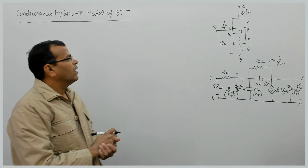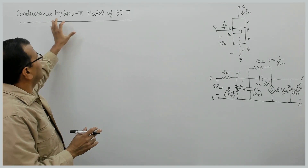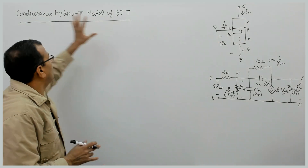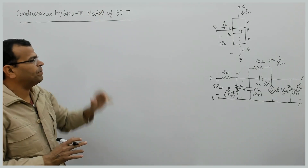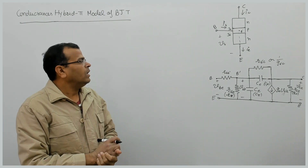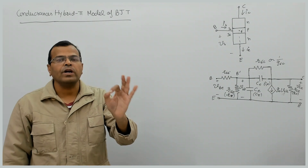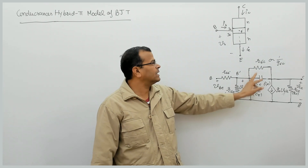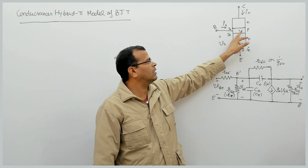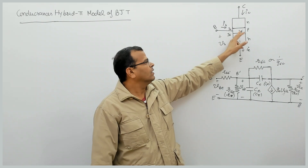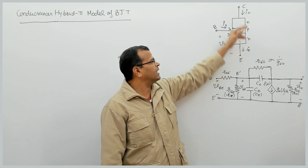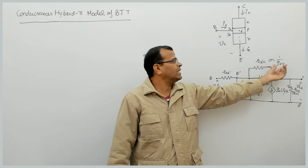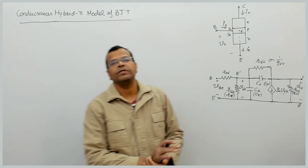Hello friends. Now we will discuss the parameters of hybrid pi model. We will talk about the conductances of hybrid pi model first. In hybrid pi model, we talk about four conductances. We can see the resistance between base — that is terminal B dash, which is the internal terminal of the BJT. The resistance between B dash and C, that is feedback resistance, is RB dash C. The conductance associated with this is GB dash C, which is feedback conductance.